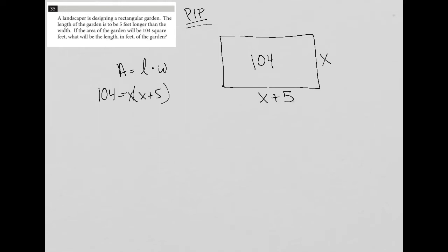So I can simplify that because that becomes 104 equals X times X plus five. When I distribute the X across, this becomes X squared plus five X. So 104 equals X squared plus five X.